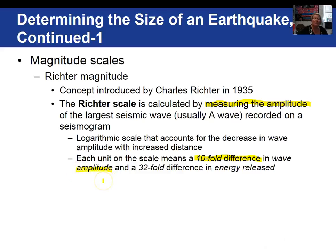So going from a 2.0 to a 3.0 means the wave amplitude increases ten times. Going from 2.0 to 4.0 means the amplitude increased ten times ten, or a hundred times greater. Even more impressive is the increase in total energy released — each step is a 32-fold increase in energy release. So from magnitude 1 to magnitude 2 would be 32 times 32, which is 1,024 times more energy.